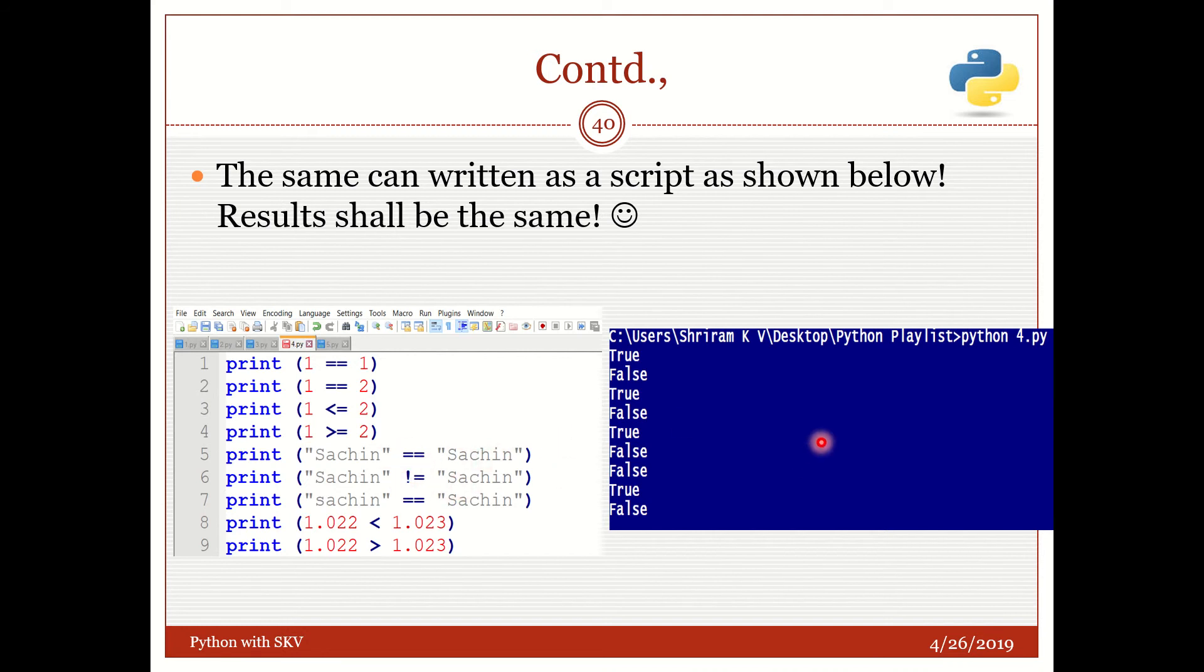Now string operations. You can see that 'Suchin' equal to 'Suchin', all the cases, all the characters are upper and lowercase letters are matching, hence it is True. Now not equal to 'Suchin', that's False. Small 'suchin' lowercase is equal to uppercase 'Suchin', that's False. I've got a False here. 1.022 floating point operation, that's also correctly done.